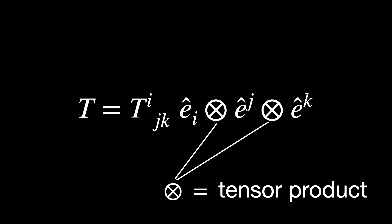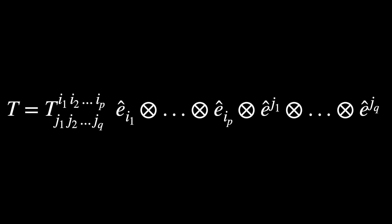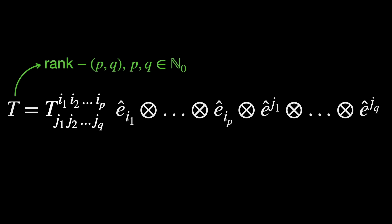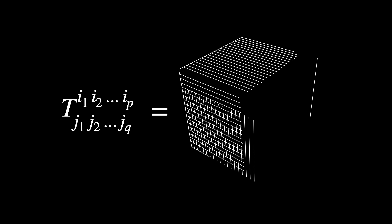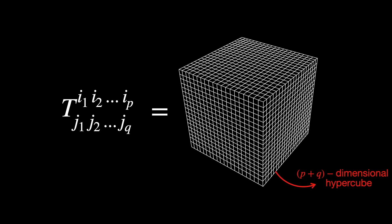At this point, maybe some of you are asking yourselves, what about a super-duper general tensor? What does that look like? This, that you are looking at, is a rank (p,q) tensor, where p and q are natural numbers. Remember, you can think of the components of this tensor, organized in a sort of p-plus-q dimensional hypercube.